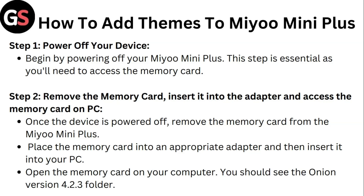Step 2: Remove the memory card, then insert it into an adapter and access the memory card on PC. Once the device is powered off, remove the memory card from the Miyoo Mini Plus, place it in an appropriate adapter, insert it into your PC, and open the memory card on your computer. You should see the Onion version 4.2.3 folder.